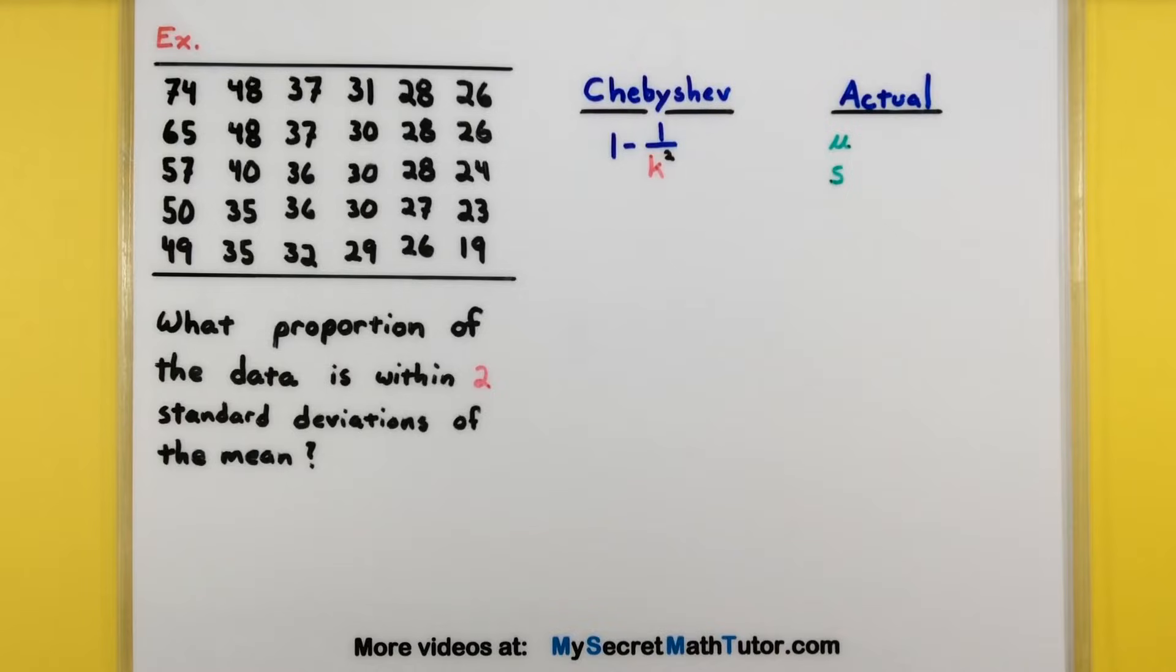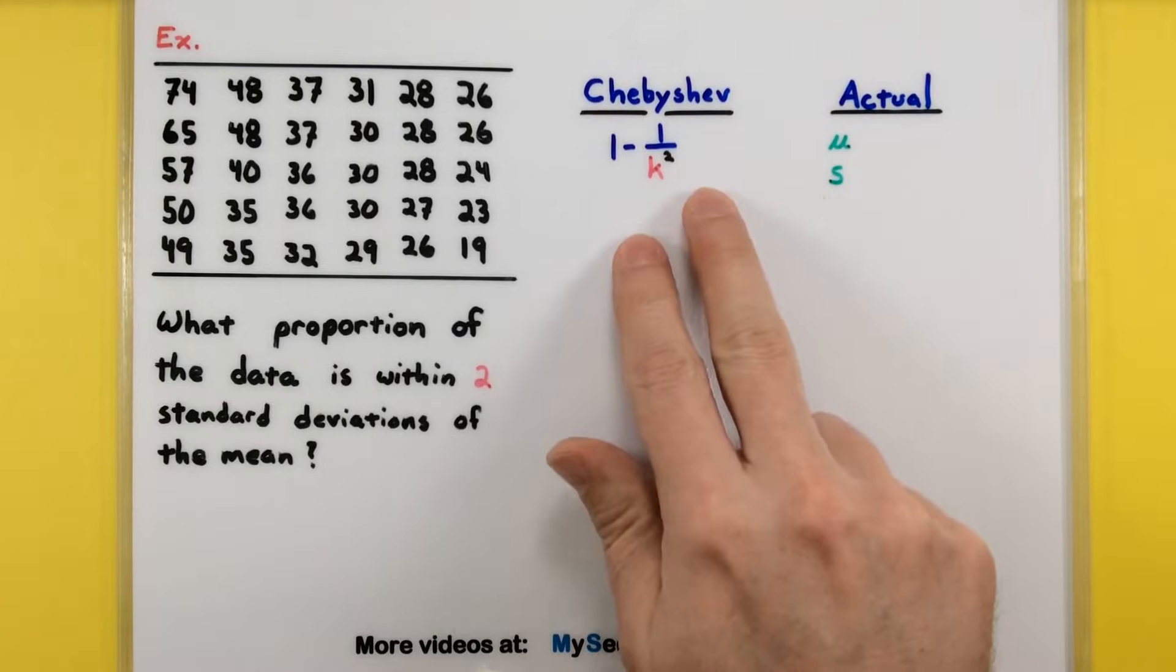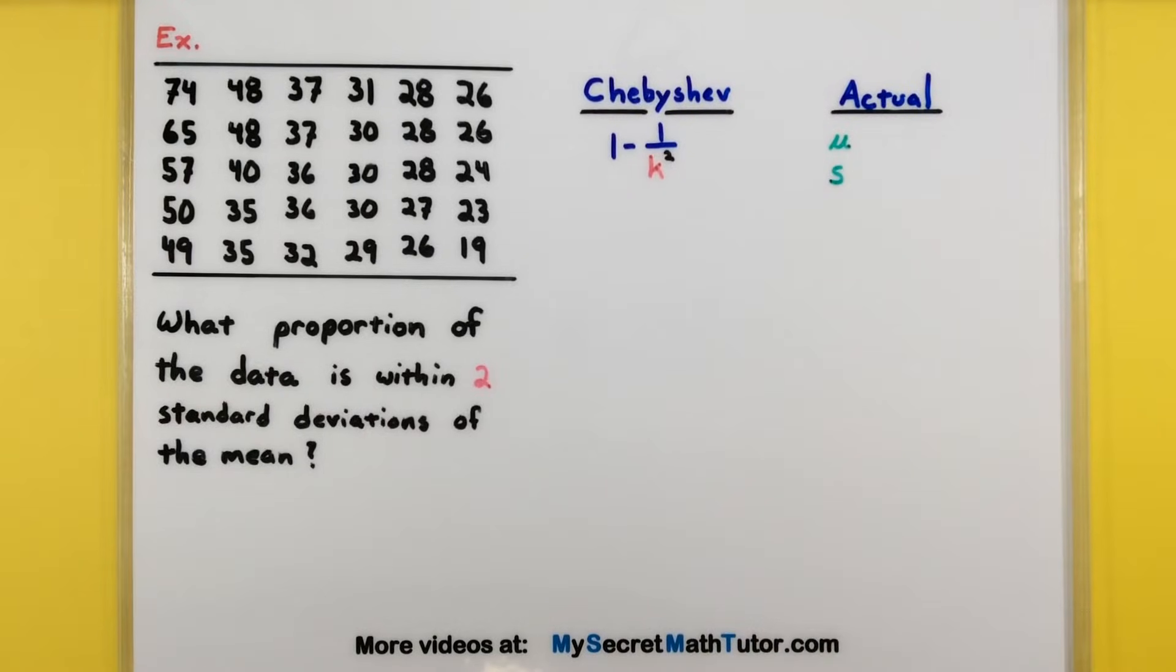For this first one we're going to compare what Chebyshev's theorem says versus the actual proportion of data. All right, so I have 30 data points over here and we want to know what proportion of the data is within two standard deviations of the mean.